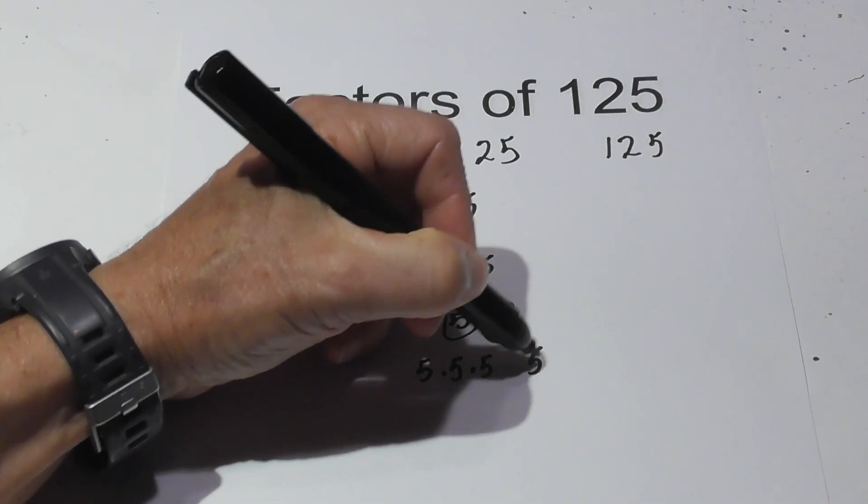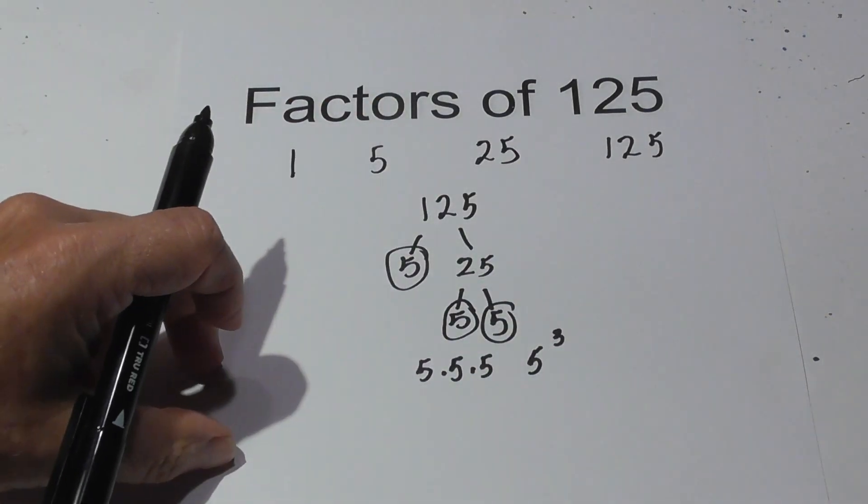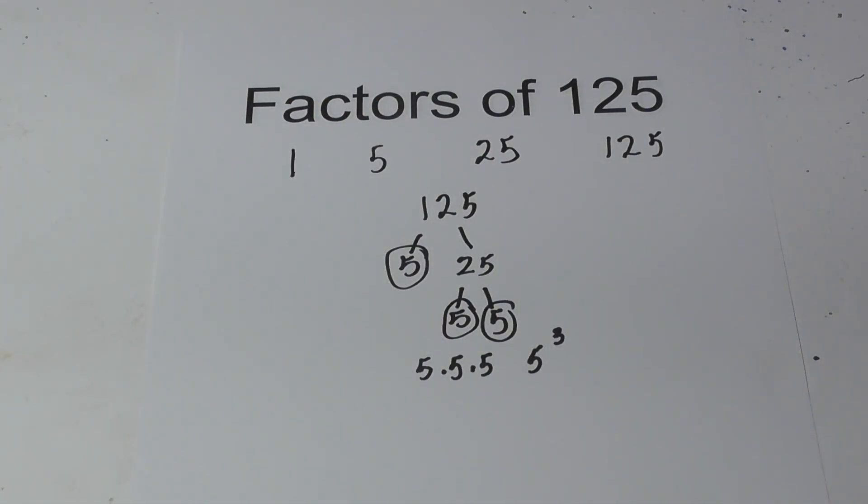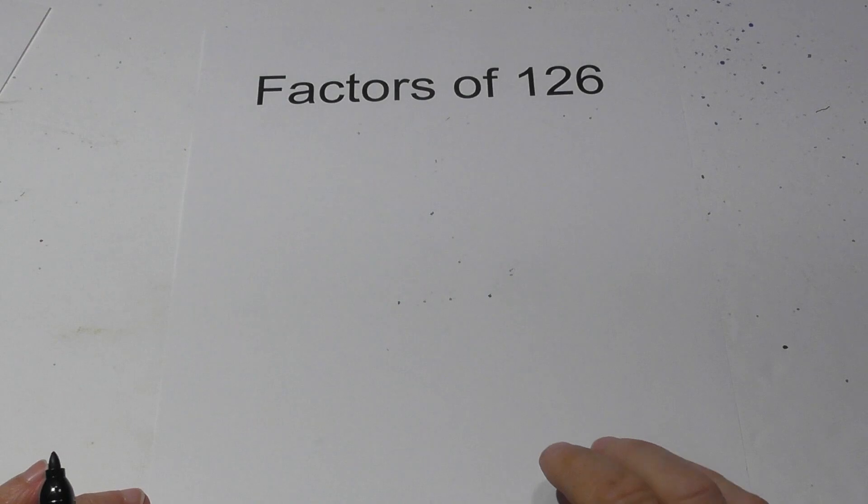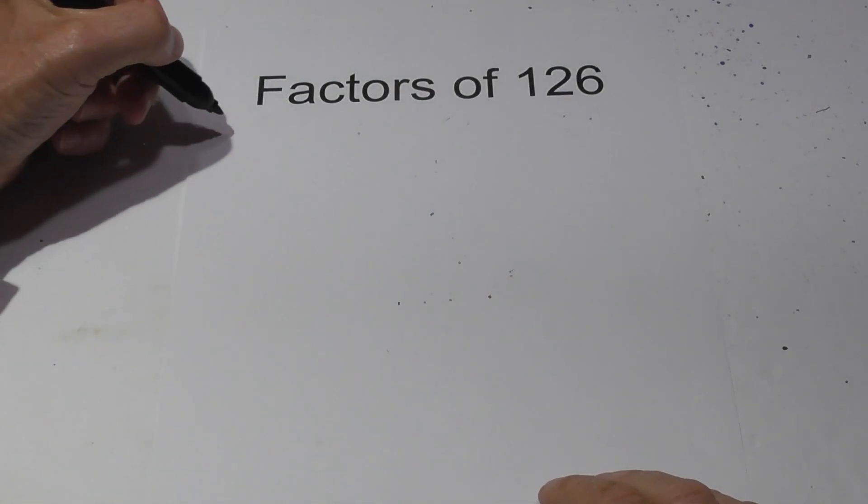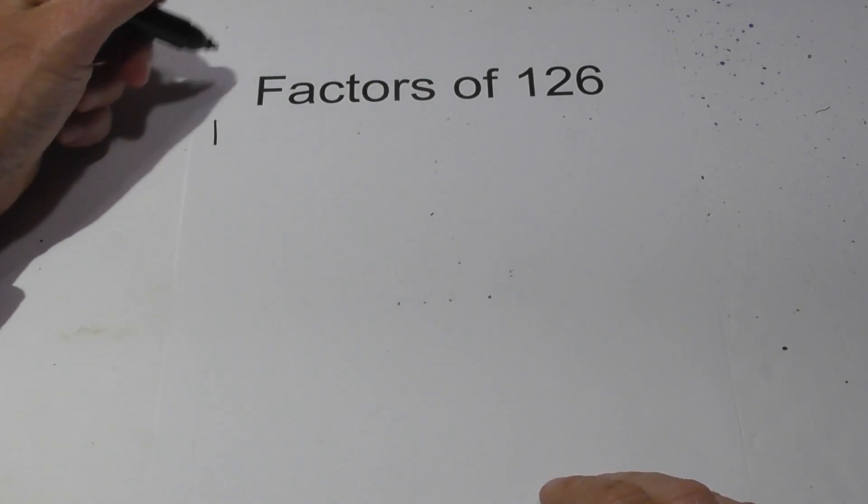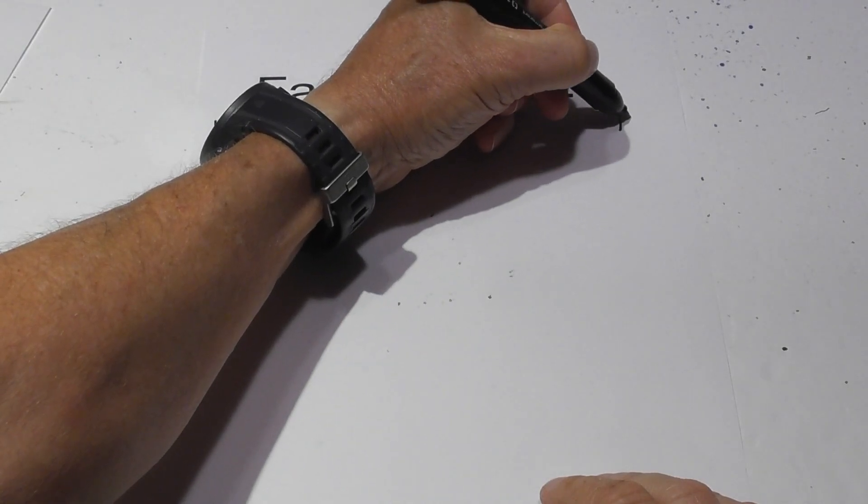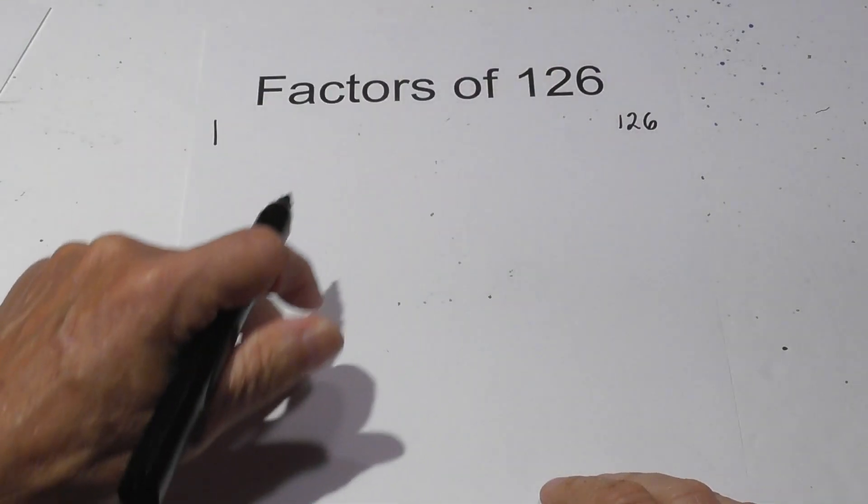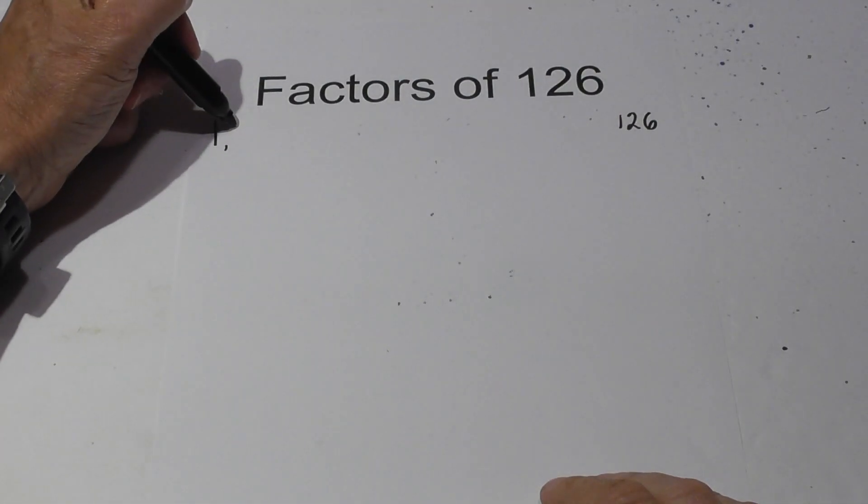Up next, 126. Now let's look at 126, and it has a lot of factors. It also is a composite number. I'm going to start with 1 times 126, and then I can go 2 times 63.